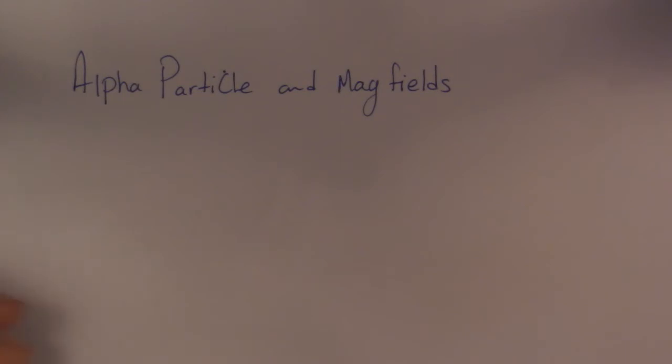A lot of people have asked me this question before so I thought I'd make a short video on it. What happens to an alpha particle when it actually goes through a magnetic field?